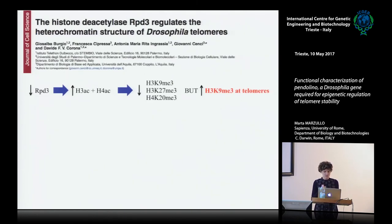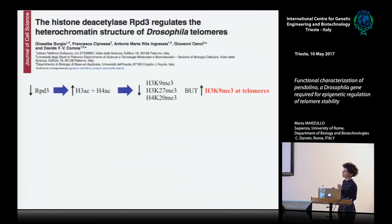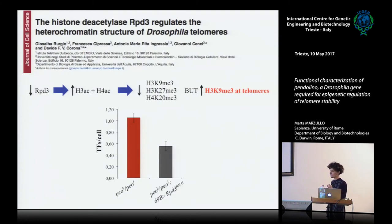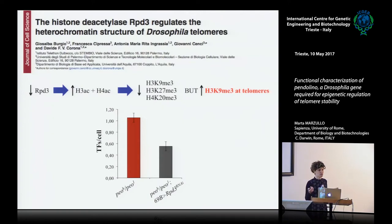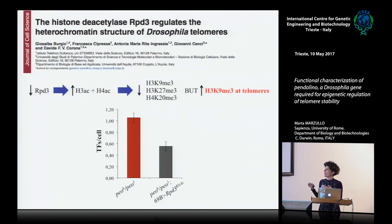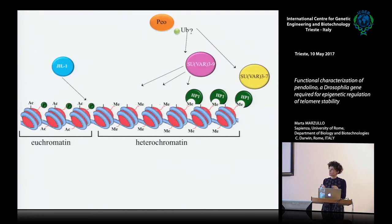Another interesting protein we analyzed is the deacetylase HDAC3, which has been demonstrated that when silenced, it causes an increase of H3 and H4 acetylation and a reduction of H3K9 methylation. We analyzed the effect of silencing this protein in a peo mutant background, and as you can see, there is a reduction of fusion frequency and a rescue of the phenotype. So it seems that when HDAC3 is absent, we have an increase of H3K9 methylation at telomeres that may in some way restore the heterochromatic status at telomeres and rescue the fusion frequency.